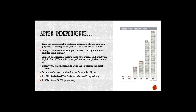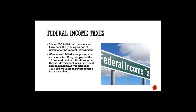Since 1950, individual personal income taxes have been the primary source of revenue for the federal government. It took a few tries for Congress to put federal income tax in place. Finally, in 1909 the 16th Amendment was passed by Congress and signed into law in 1913 — and we've been paying income taxes to the federal government ever since.